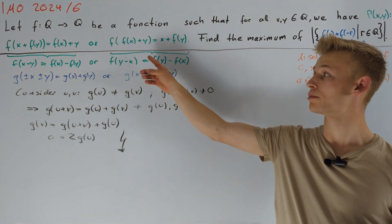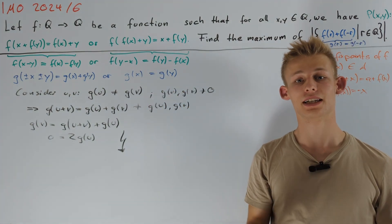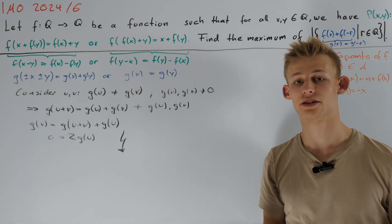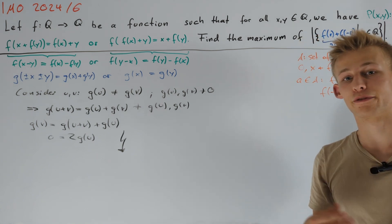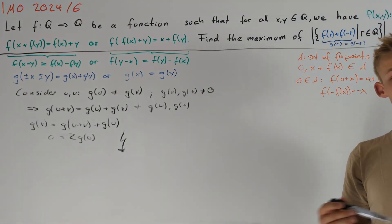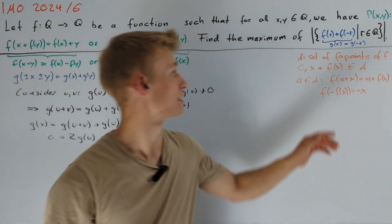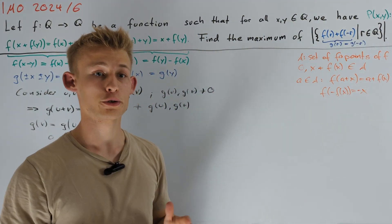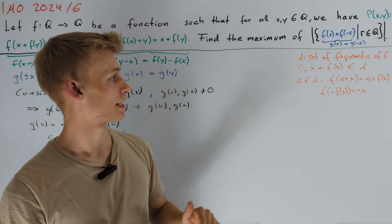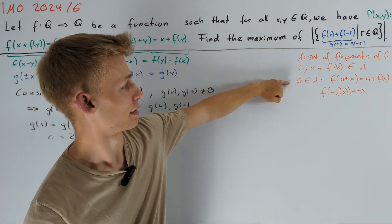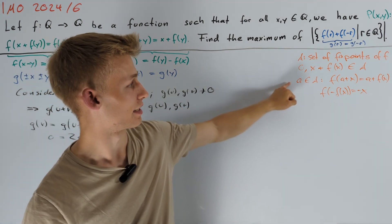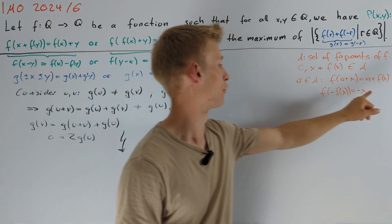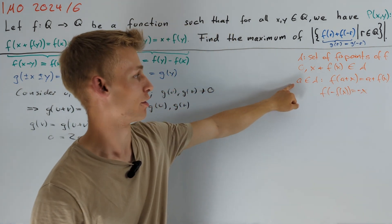By taking f to be the identity function, we clearly see that 1 works. But now the last question to answer is whether 2 is also possible. So let's try to create a function such that g is not constant. Looking back at the equation f(a+x) = a + f(x) for fixed points a of f, let's first work under the assumption that a = 1 is a fixed point.